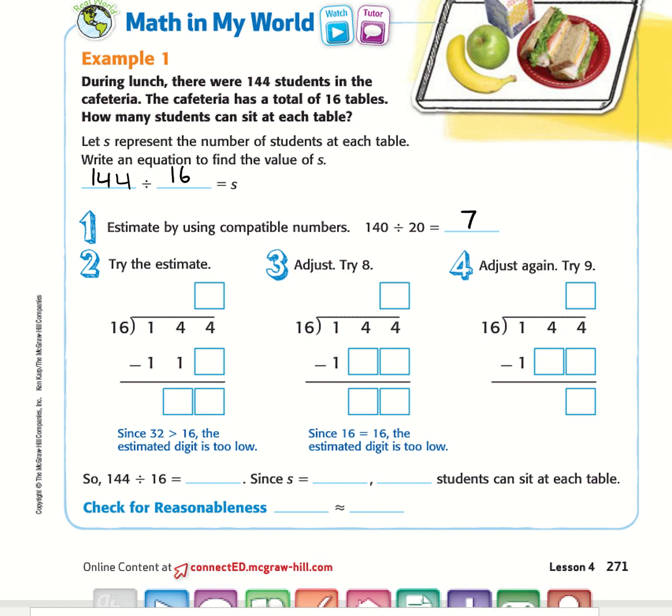Now that we did the estimate, we're going to try using the estimate in the regular answer. We have 144 divided by 16. 16 cannot go into 14, so we're moving over to the last digit, the ones place.